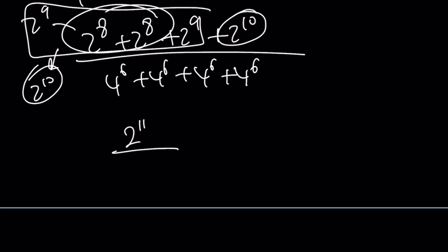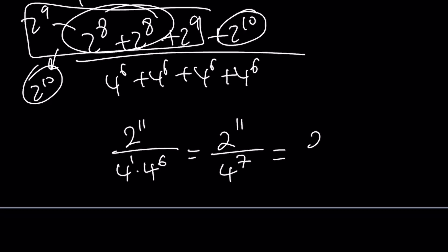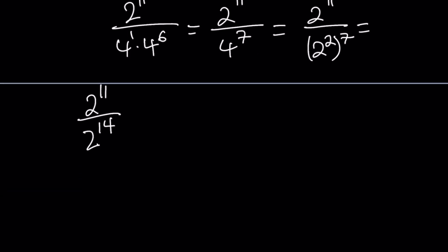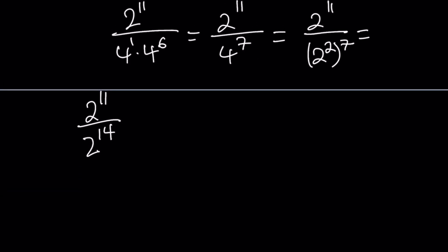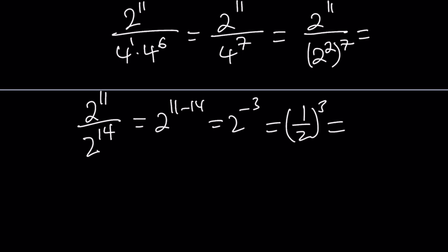For the denominator, I can write it as 4 times 4 to the power of 6, because I'm adding it 4 times. By the same rule, we add the exponent, giving us 4 to the power of 7. This becomes 2 to the 11th divided by 4 to the power of 7. Now I'll use the power-of-a-power property: I write 4 as 2 squared, then raise it to the 7th power. So 2 and 7 are multiplied as exponents, giving 2 to the power of 14. That gives us 2 to the power of 11 minus 14, which is 2 to the power of negative 3, or 1 over 2 to the power of 3, which is 1 over 8.